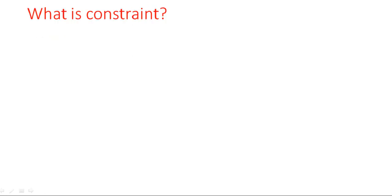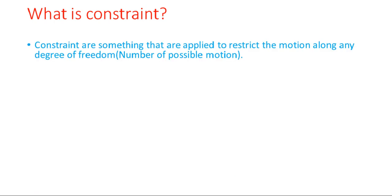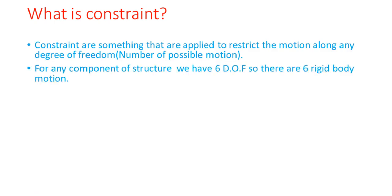So what is a constraint? The word itself means limitations or restrictions. These are the structural support conditions that are mathematically expressible as constraints on individual degrees of freedom. We can say that constraints are supports used to restrain a structure against relative rigid body motion.